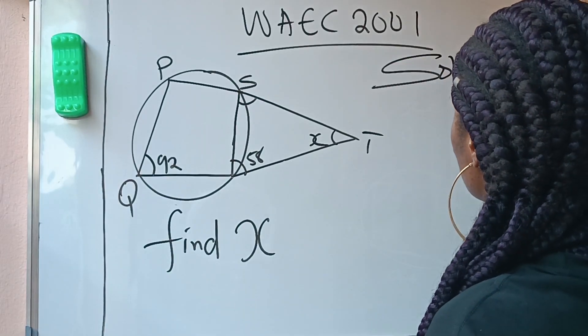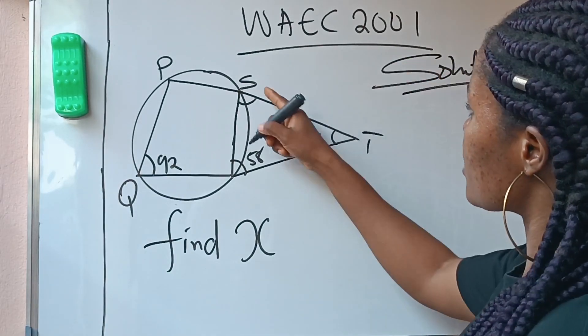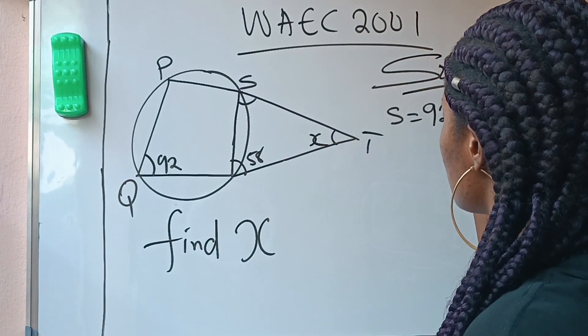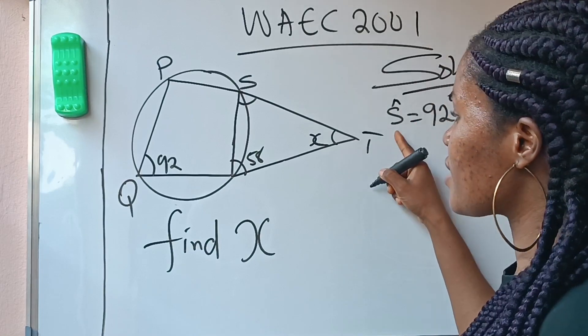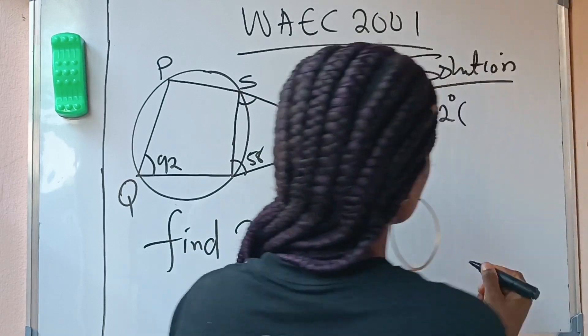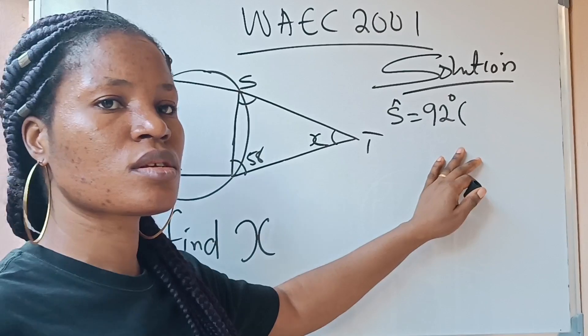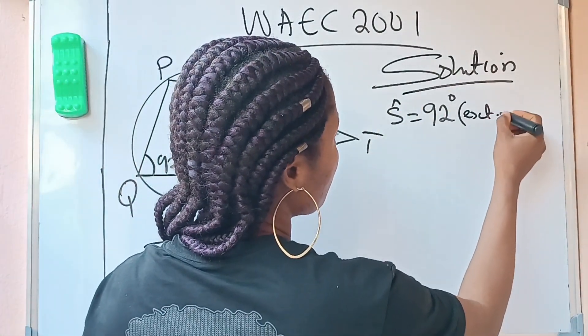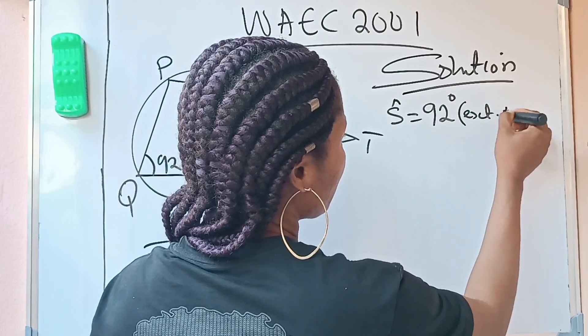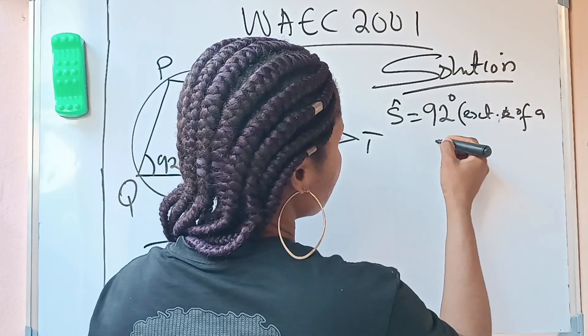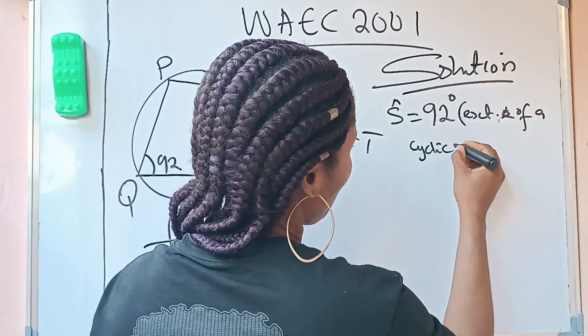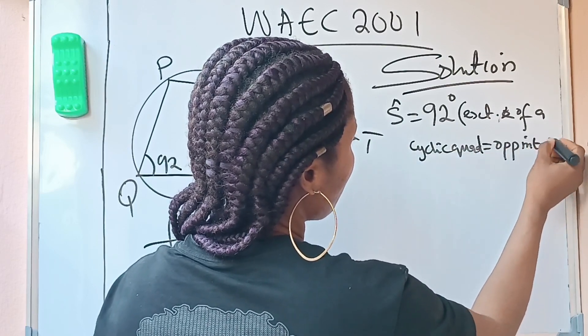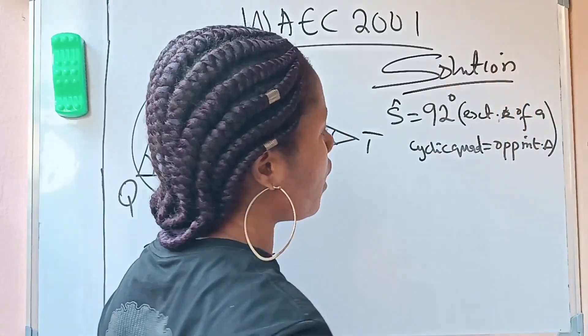Solution. So let's call it S. That this S is equal to 92 degrees. This angle S is 92 degrees. Now what is the reason? The reason is opposite exterior angle. Exterior angle of a cyclic quad is equal to opposite interior angle.